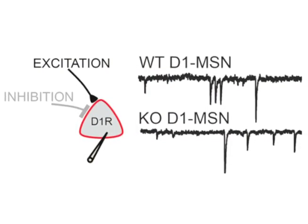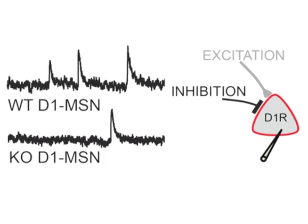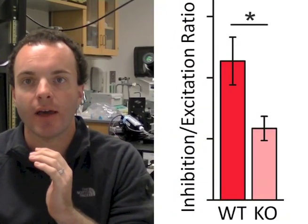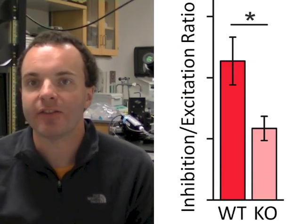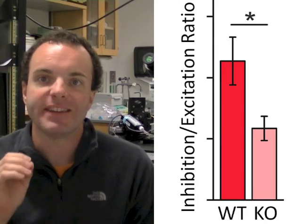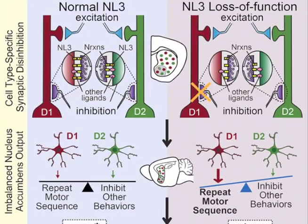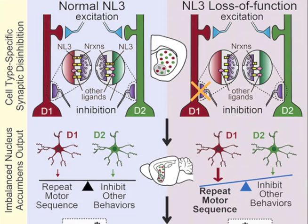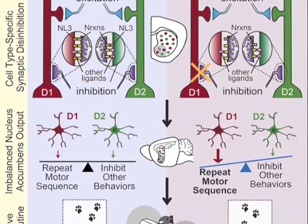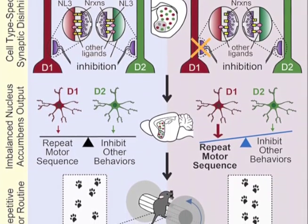We used electrophysiology to directly measure synaptic function by recording from D1 medium spiny neurons in acute brain slice preparations of the nucleus accumbens. Excitatory synapses onto these neurons appeared to function normally in Neuroligin-3 knockout mice. However, we detected a specific decrease of inhibitory synaptic currents, leading to a shift in the ratio between synaptic inhibition and excitation. We believe that the synaptic disinhibition of these specific brain cells likely explains the repetitive behaviors exhibited by Neuroligin-3 mutant mice. These experiments led us from genetic mutations to a specific synaptic dysfunction in a defined cell type and brain region, and this precisely defined neural circuit may be affected in autism spectrum disorders.